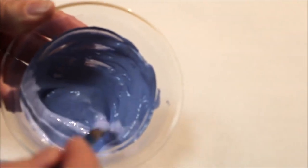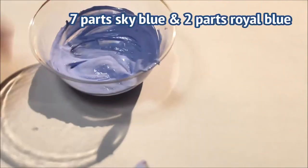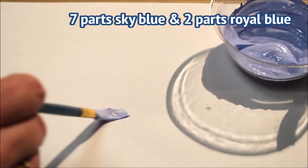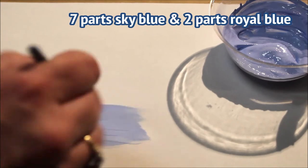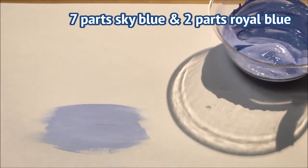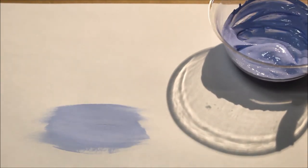Again, if you're looking for a recipe of sorts, I would say that's seven parts sky blue and two parts royal blue added. So just test it out and check it out here on the paper and it looks pretty good.